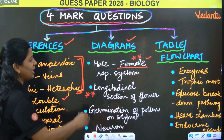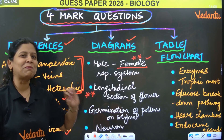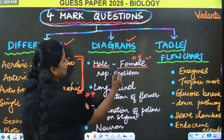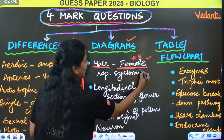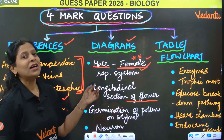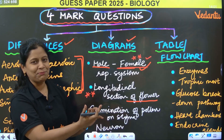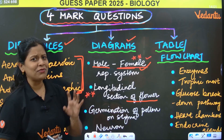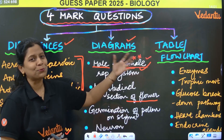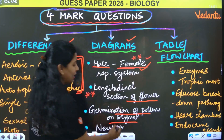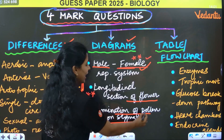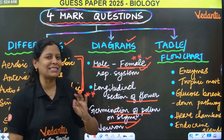Then diagrams — a diagram for 4 marks is definitely going to come in the question paper. Male and female reproductive system — very, very important. Female reproductive system is an expected question for tomorrow. Also the longitudinal section of a flower — gynecium and andrecium, i.e., the male part and female reproductive part — pistil and stamen. Label these very carefully. In diagrams, 2 marks out of 4 are given especially for labeling. Germination of pollen on stigma, pollen tube formation, and double fertilization — an important diagram. Also neuron diagram from control and coordination chapter — very, very important for 4 marks. Nephron diagram too.